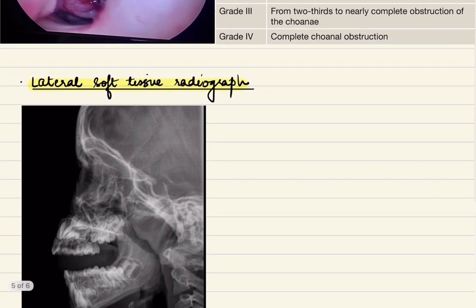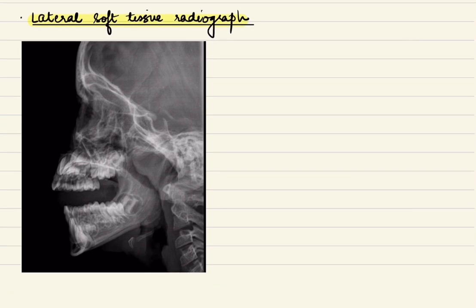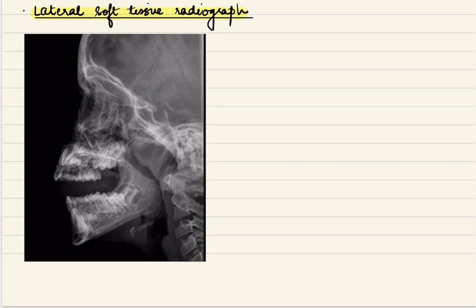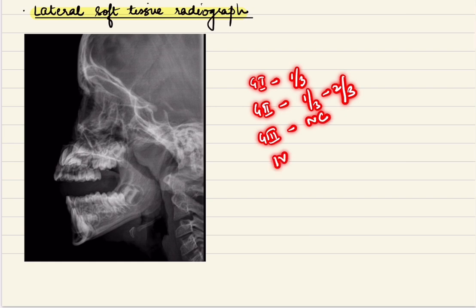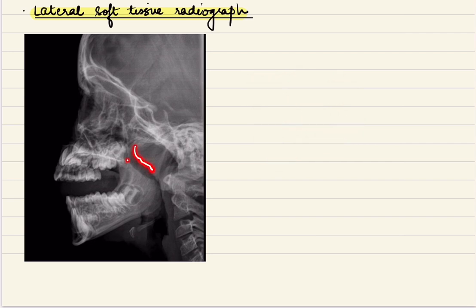When the patient is not cooperative or endoscopy is not feasible, a lateral soft tissue radiograph of the nasopharynx can be obtained. Various grading systems classify adenoid hypertrophy on lateral radiograph by comparing adenoid size to the nasopharyngeal airway: Grade 1 — up to one-third of the airway; Grade 2 — one-third to two-thirds; Grade 3 — near complete obstruction; Grade 4 — complete obstruction, where the adenoid is touching the soft palate.